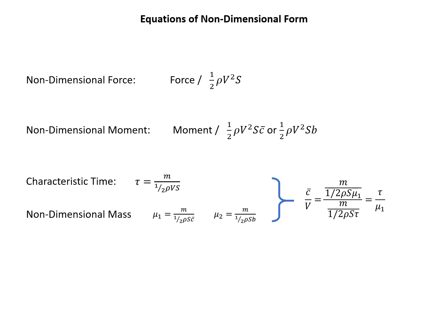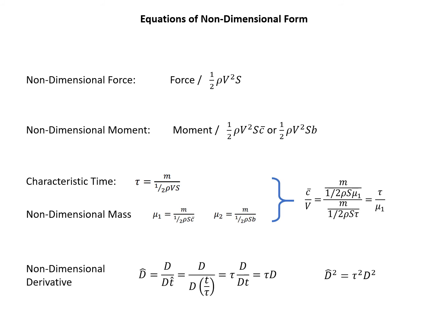We will use the conclusion c̄/V = τ/μ₁ later. For non-dimensional derivatives, we have the operator d/dt̂ where t̂ = t/τ. Taking τ out, we get d̂ = τ·d. Similarly, the second-order non-dimensional differential operator d̂² equals τ² times d². This is the rule for non-dimensionalizing the governing equations.